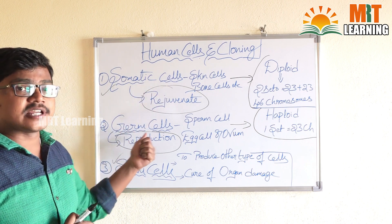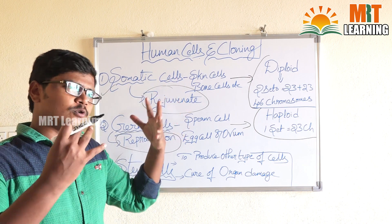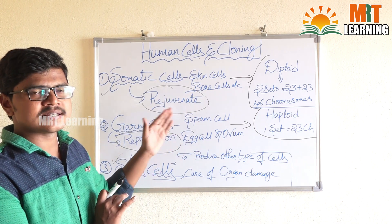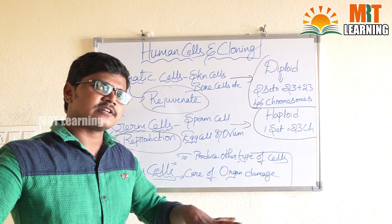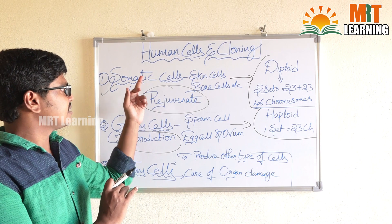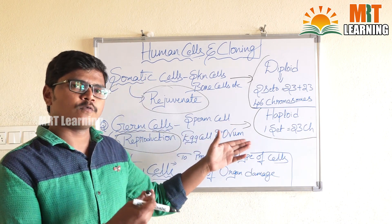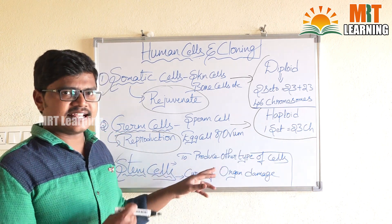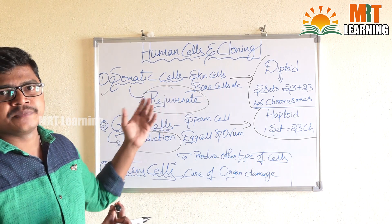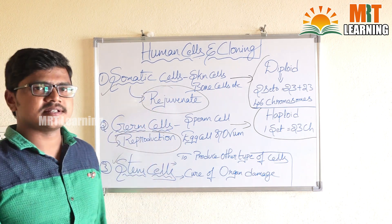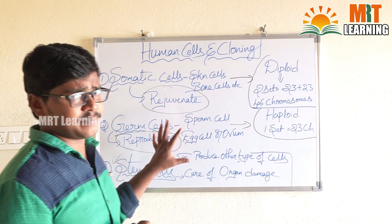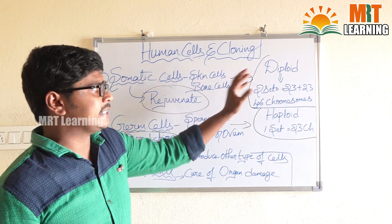So to recap the three categories: somatic cells, germ cells, and stem cells. Our body is completely filled with somatic cells except for sperm cells and egg cells, which come under germ cells. Skin cells, bone cells, cancer cells, and blood cells all come under somatic cells. The uses are: somatic cells rejuvenate, germ cells are for reproduction, and stem cells cure damaged organs or assist in organ transplantation. Now, which cells are called diploid and which are called haploid?